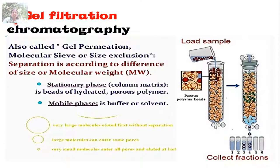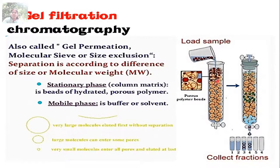The next technique is gel filtration, also called gel permeation chromatography. Separation of protein molecules depends on size and molecular weight — it is also called molecular sieve or size exclusion chromatography. The separation is according to difference in size and molecular weight. The stationary phase in this column chromatography is a matrix filled with agarose in fine powder form, available as Sephadex with different cutoff pore sizes.